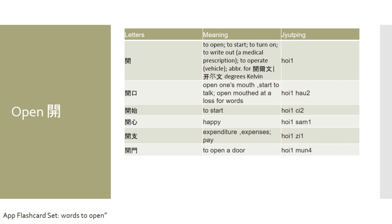If you want to say 'to get started on something' in Cantonese, you can say 開始. 'Happy' in Cantonese is pronounced 開心. Happiness is associated with expenditures of all kinds, and 'expenditure' or 'expenses' in Cantonese is pronounced 開支. And lastly, 'to open a door' in Cantonese is pronounced 開門. If you wish to review these words in our Android app, it is found in the flashcard set named 'words to open.'